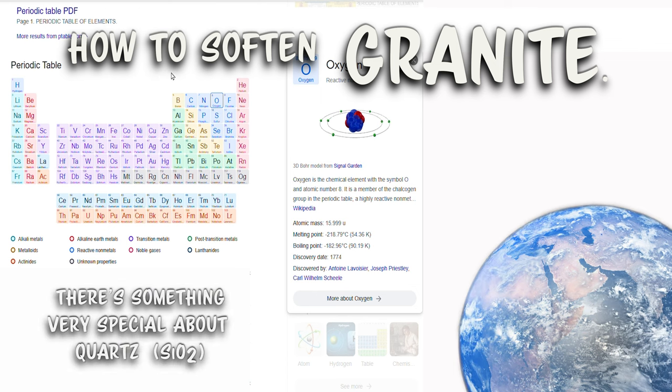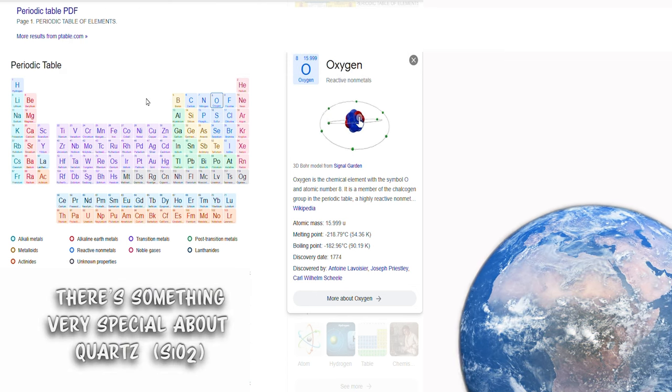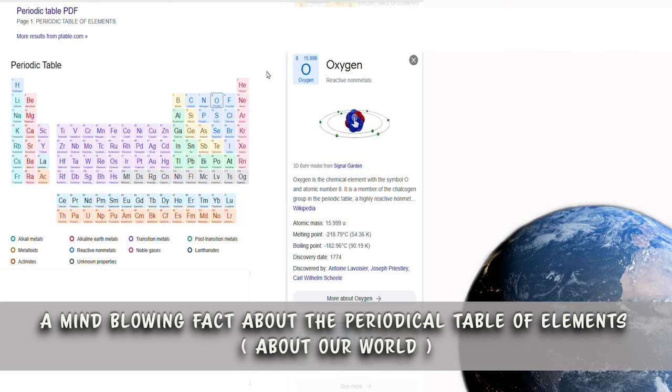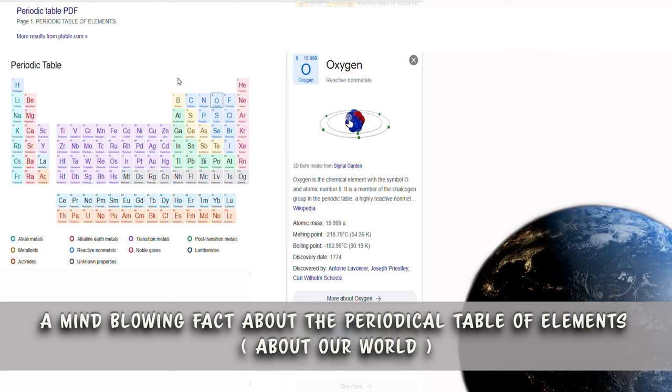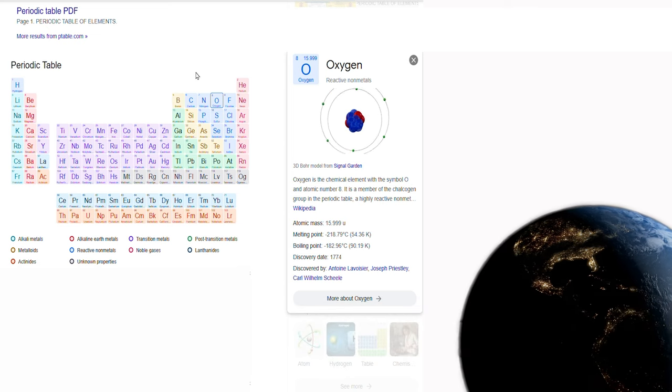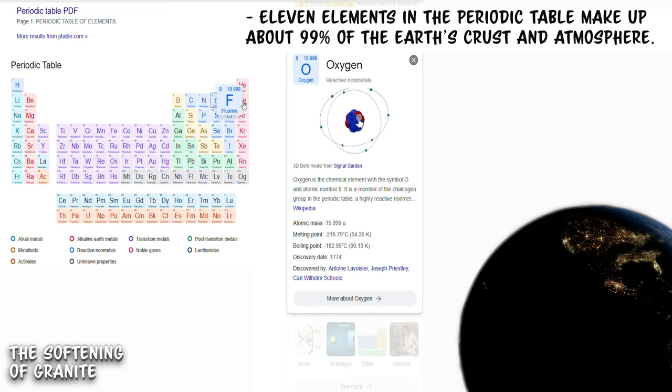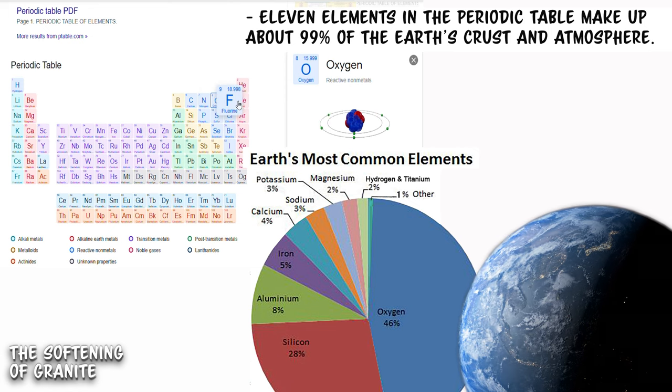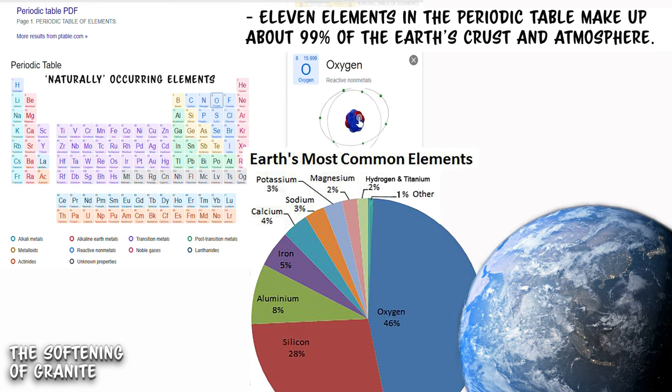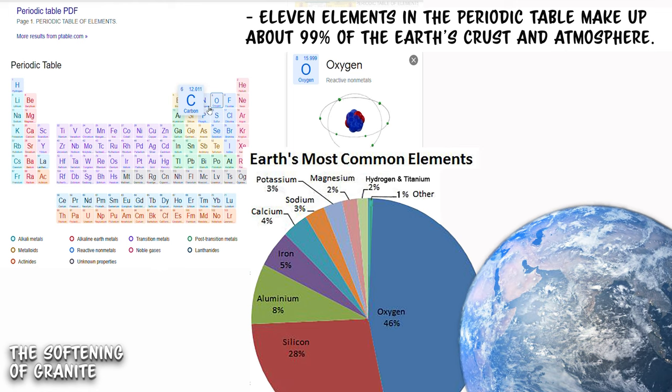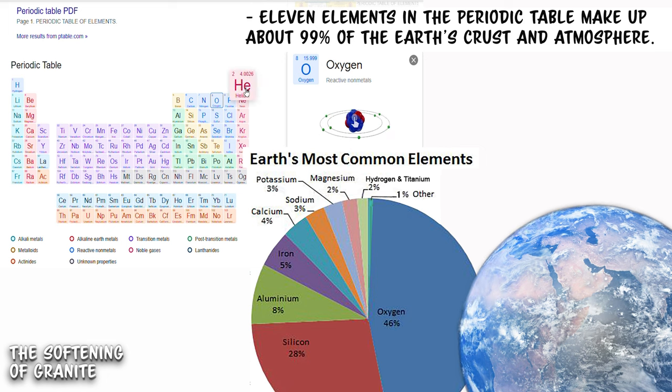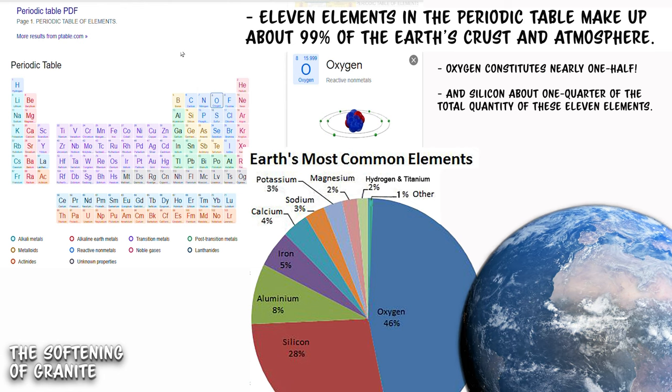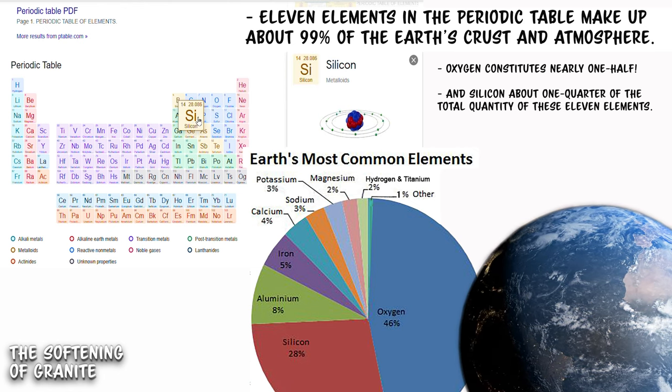Most of us took chemistry back in high school, and some of us went further with it in college, and I want to refresh your curious mind of some crazy facts that still blow my mind to this very day, regarding the periodic table of elements. Perhaps you remember these, perhaps you don't, but here goes. Eleven elements in the periodic table make up about 99% of the Earth's crust and atmosphere. That's right, out of the 90 or so naturally occurring elements, eleven of them make up 99% of the world as we know it and can see and touch. And oxygen is nearly half of this, and silicon is about a quarter of the total quantity of these eleven elements. I know, it's mind-blowing.